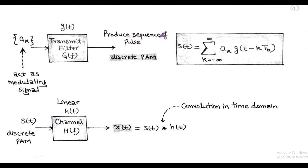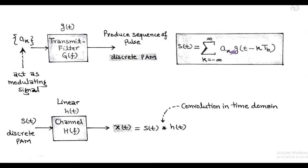That is the basic form of baseband transmission, in the form of a sequence of pulses. The discrete PAM signal is represented by s(t) = Σ a_k · g(t − k·T_b), where a_k is the coefficient and the pulse g(t) is shifted according to the sampling instant k·T_b. Here T_b is the bit duration.